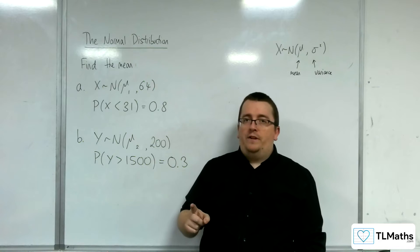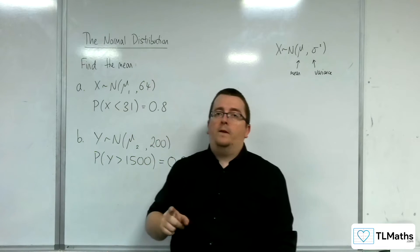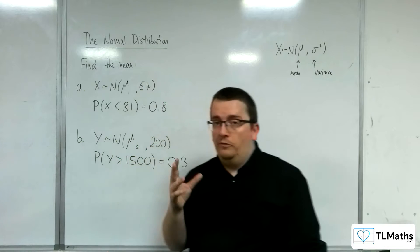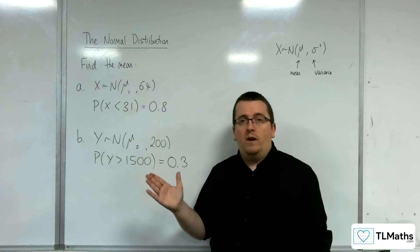At this point, however, you need to start using the formula, z equals x minus mu over sigma, because you can't solve these problems on your calculator directly.